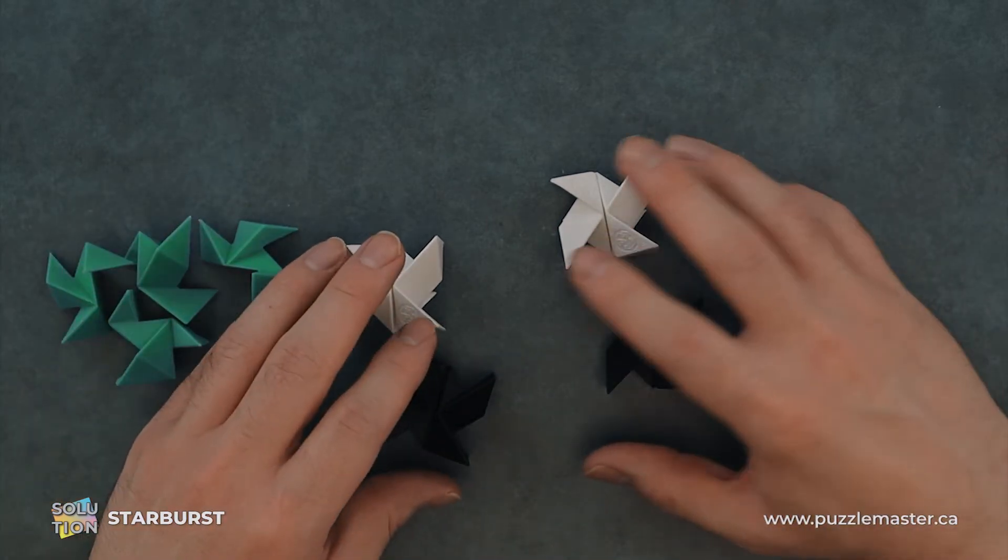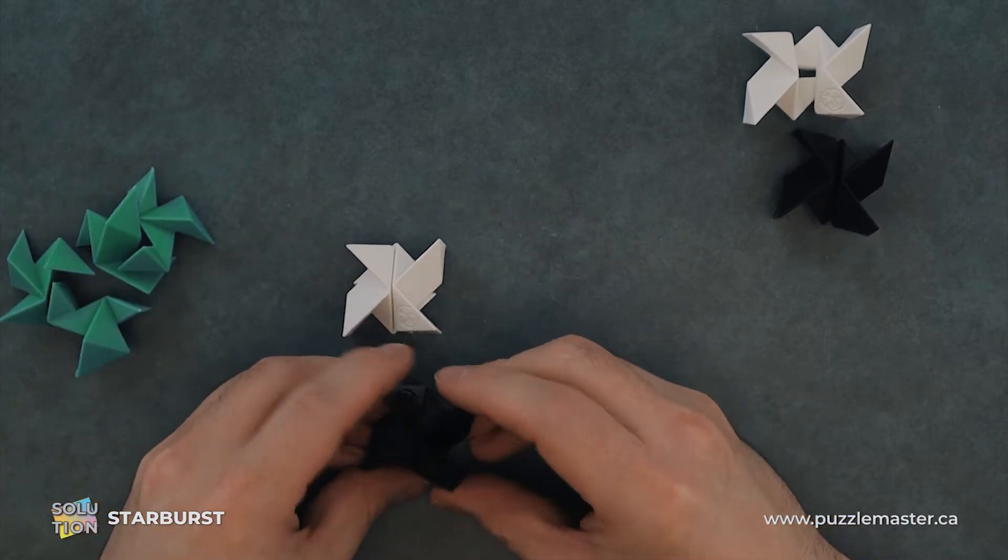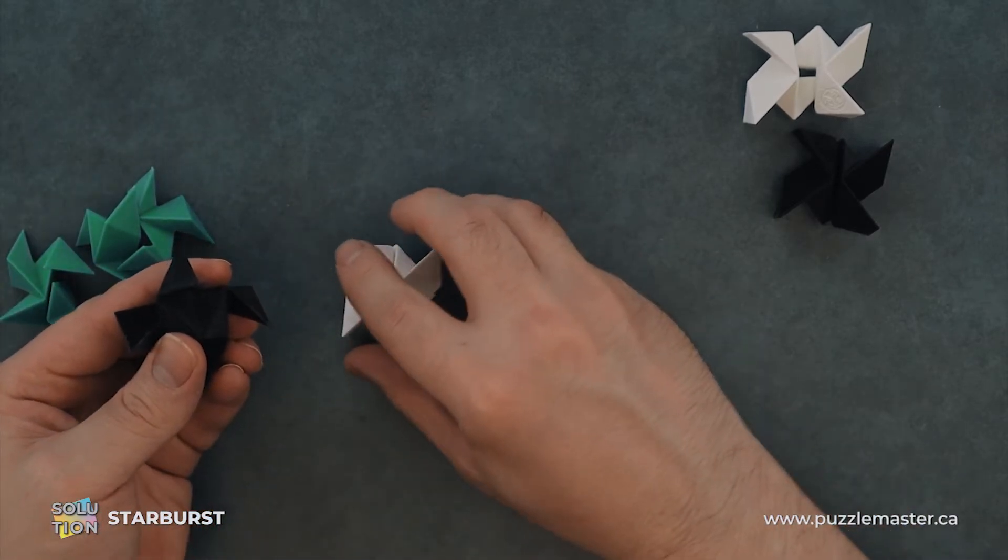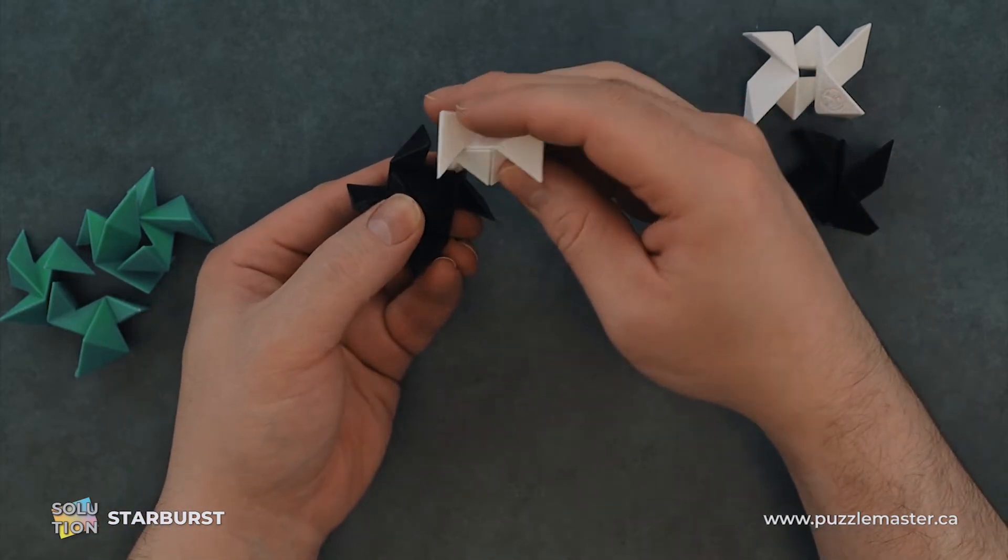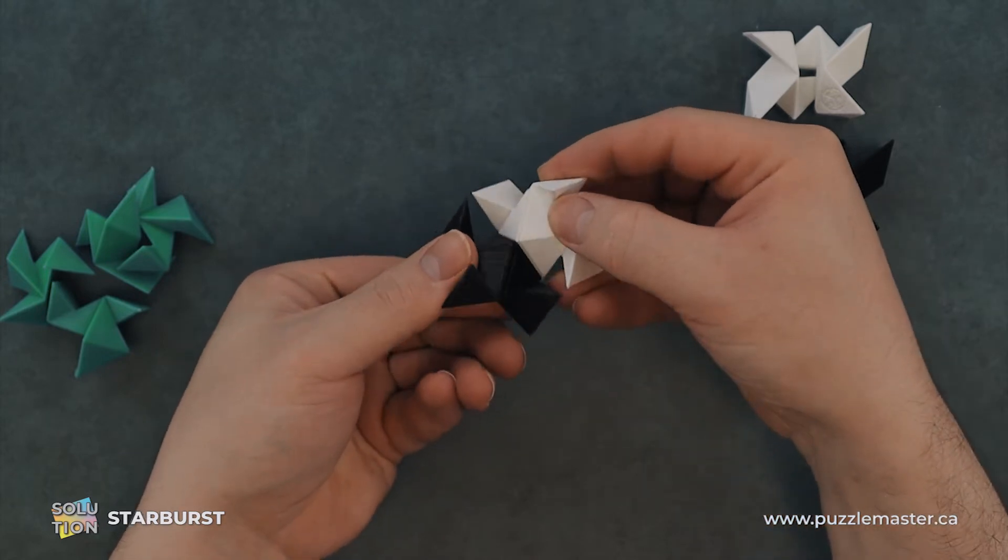So we have four of these. We will move two of them off to the side. We'll get back to those. Now we'll take these two and we will slide them together like so.